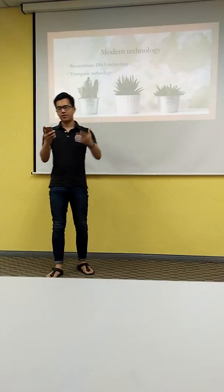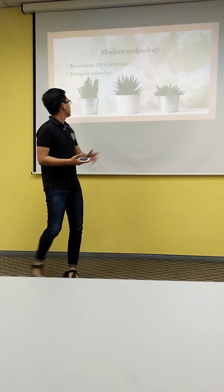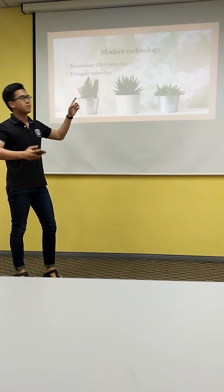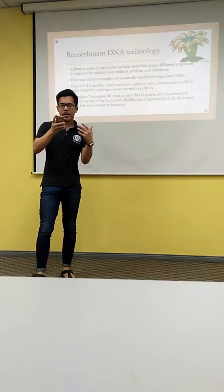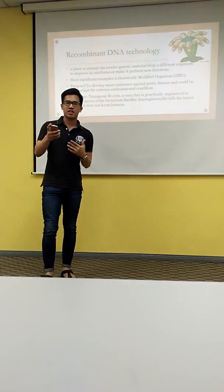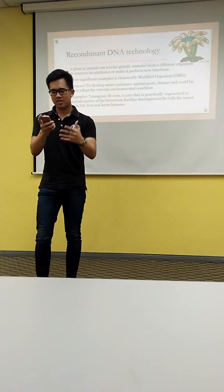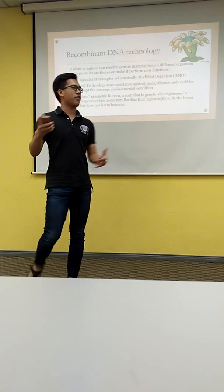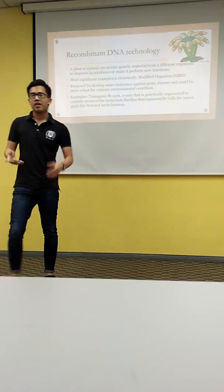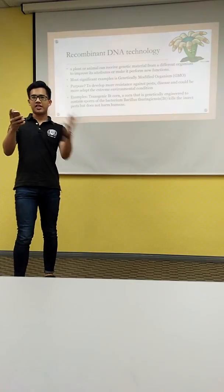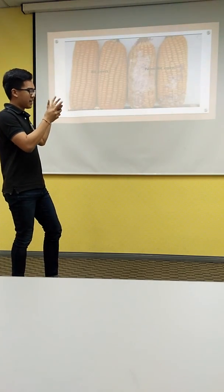I will continue with modern biotechnology. For modern agricultural biotechnology, such as recombinant DNA technology and transgenic technology, they include a range of tools that scientists employ to understand and manipulate the genetic makeup of genetic materials for the production and processing of agricultural products. Examples of the products include genetically modified organisms, GMOs, as you all know, and transgenic plants and animals.